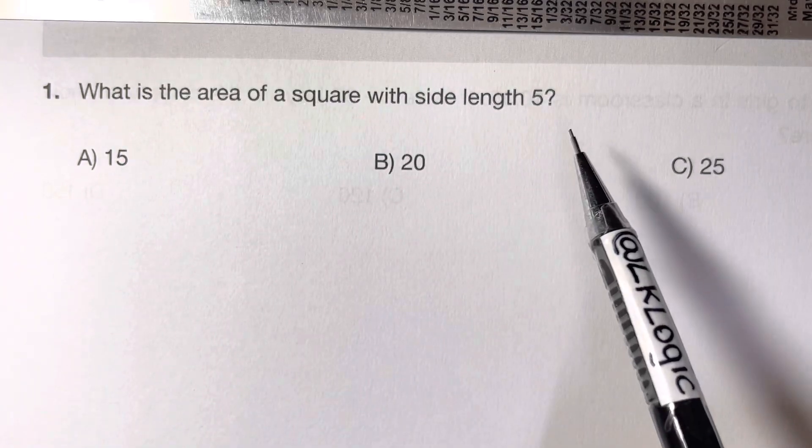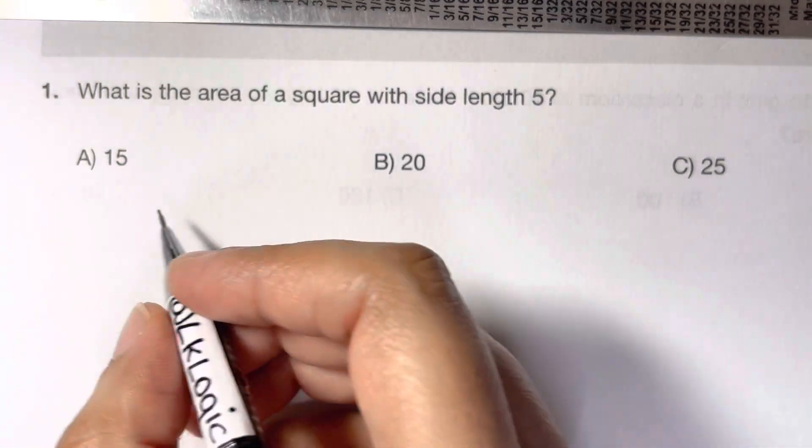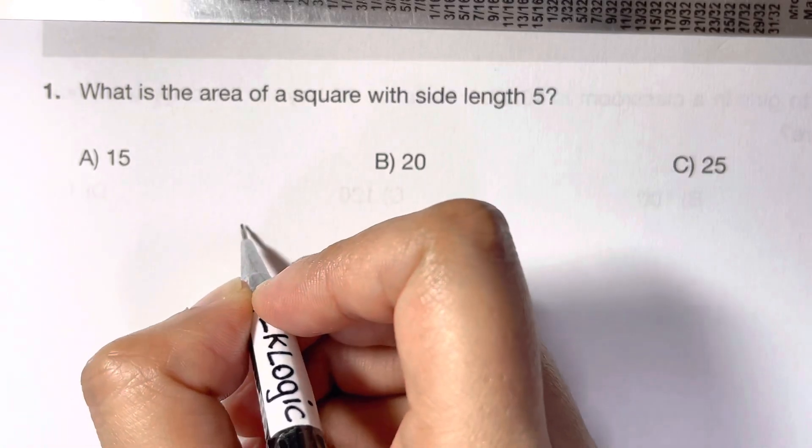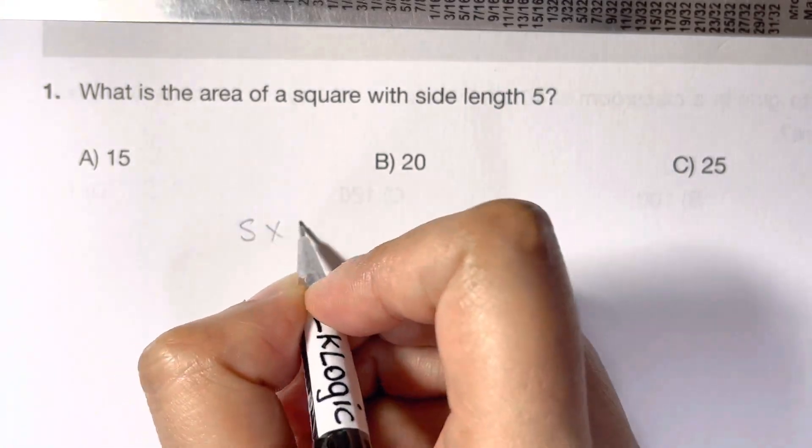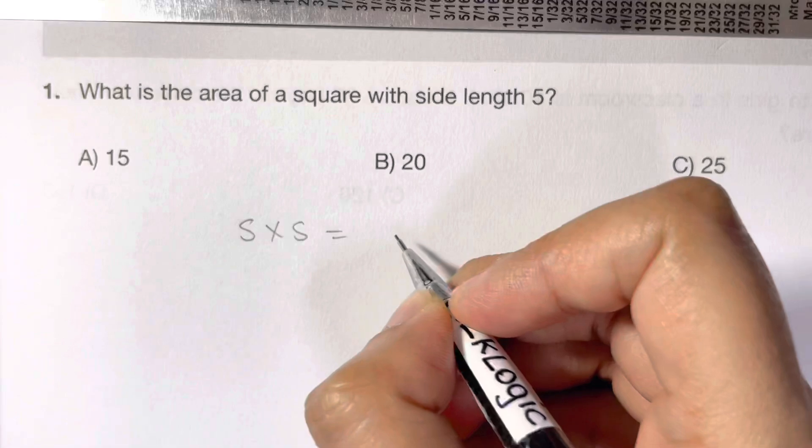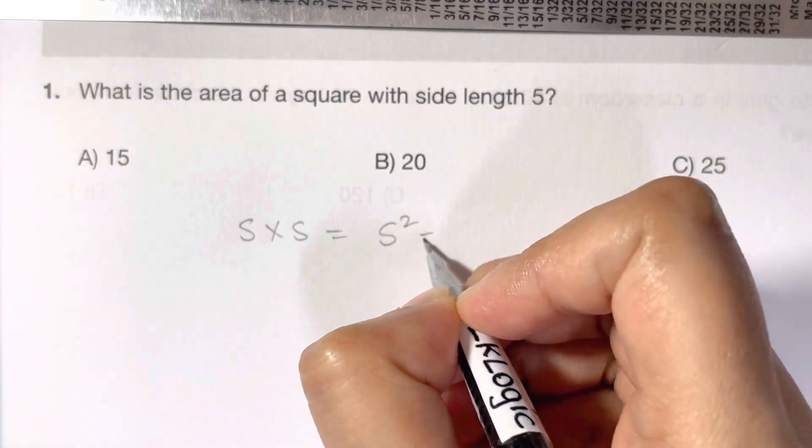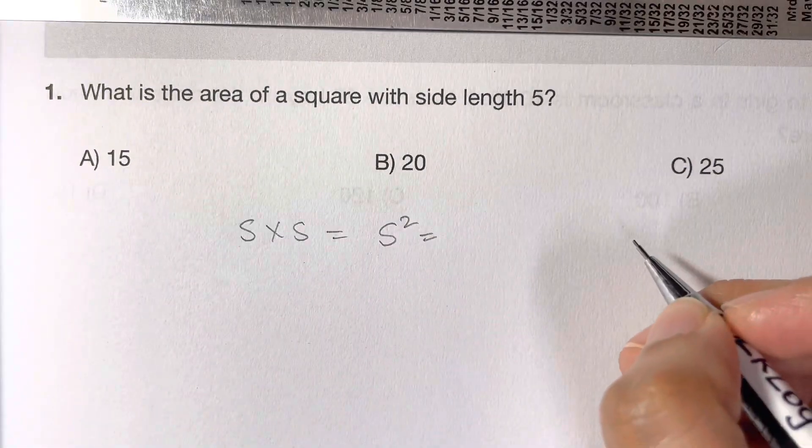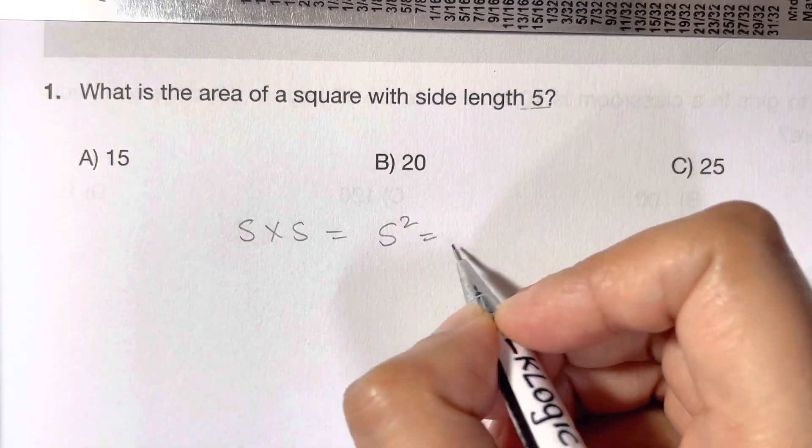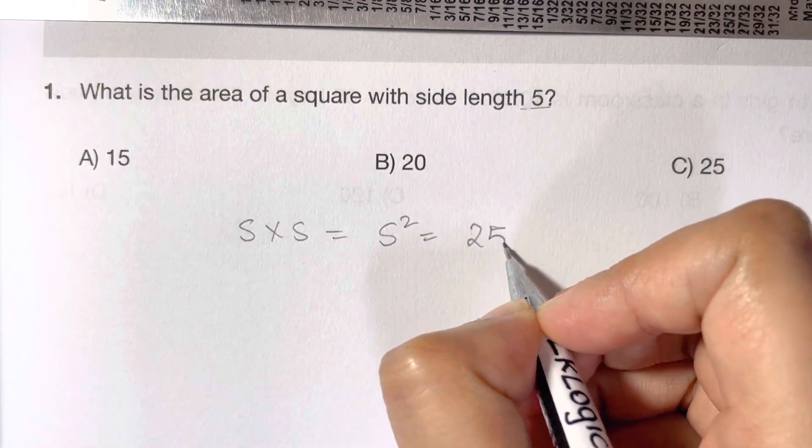Now that's really easy. Area of a square is always side times side, so that's equal to side squared. Side times side with the length of 5, so 5 times 5 is 25, and that's your answer, choice C.